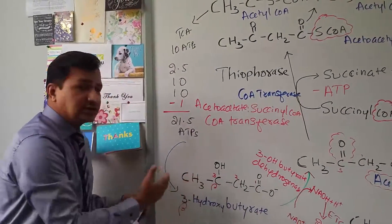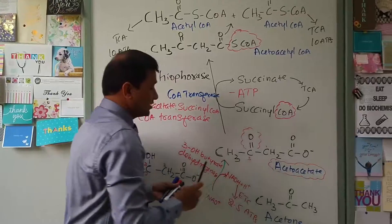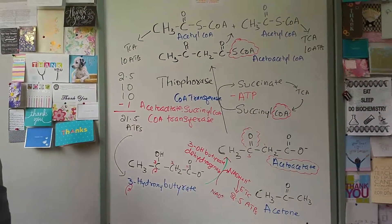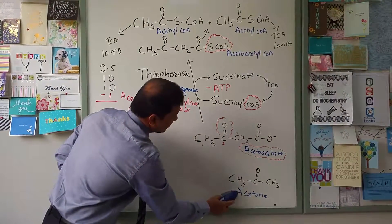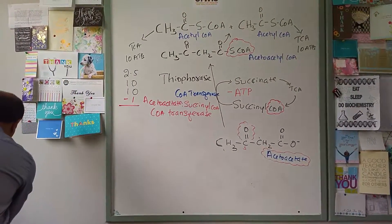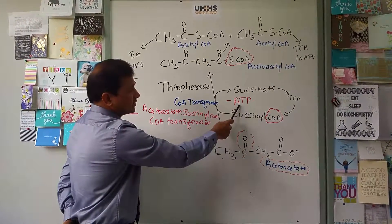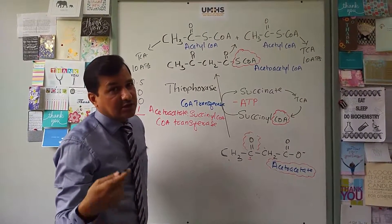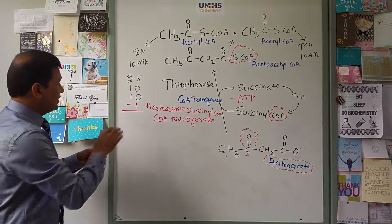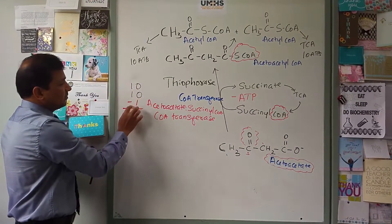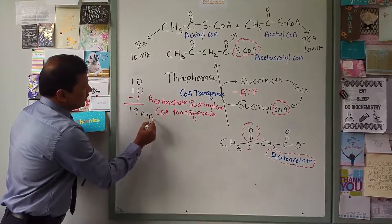Now let's calculate how many ATPs you get from oxidation of acetoacetate alone. Consider your tissue has taken up only acetoacetate. Acetoacetate is converted to acetoacetyl CoA — same process applies. Succinyl CoA is converted to succinate, so 1 ATP is consumed rather than produced. Acetoacetyl CoA breaks into 2 acetyl CoA molecules, each giving 10 ATP, so 20 ATP total. Subtract 1 ATP: the net gain is 19 ATP.